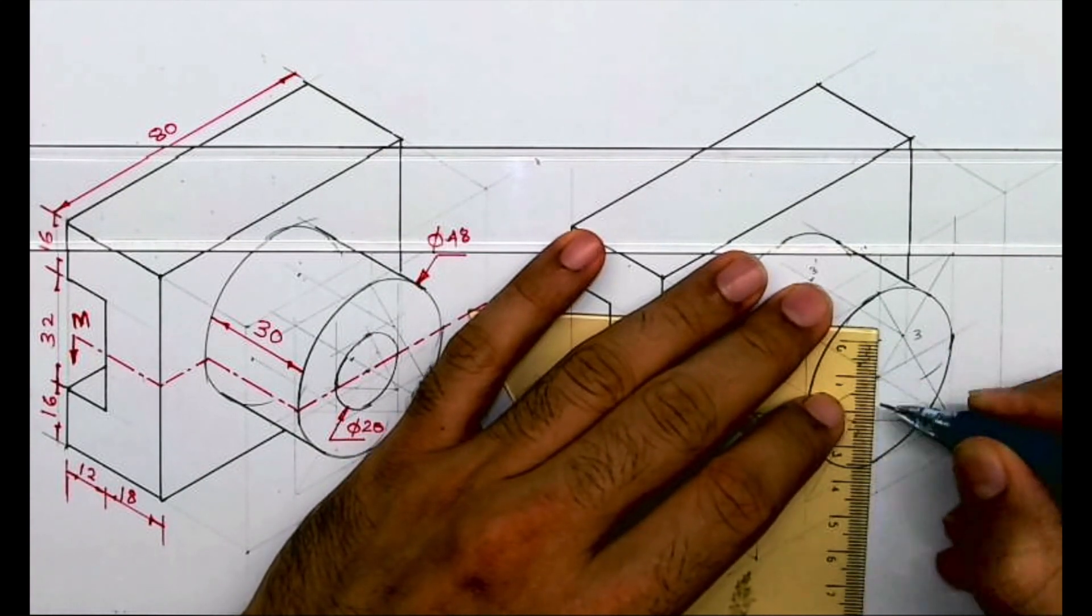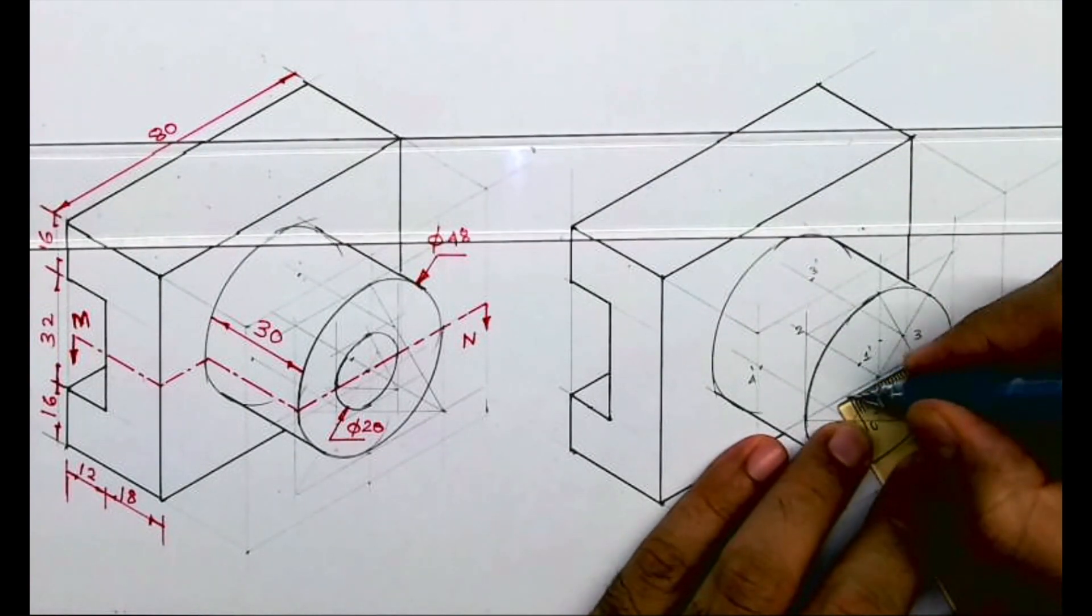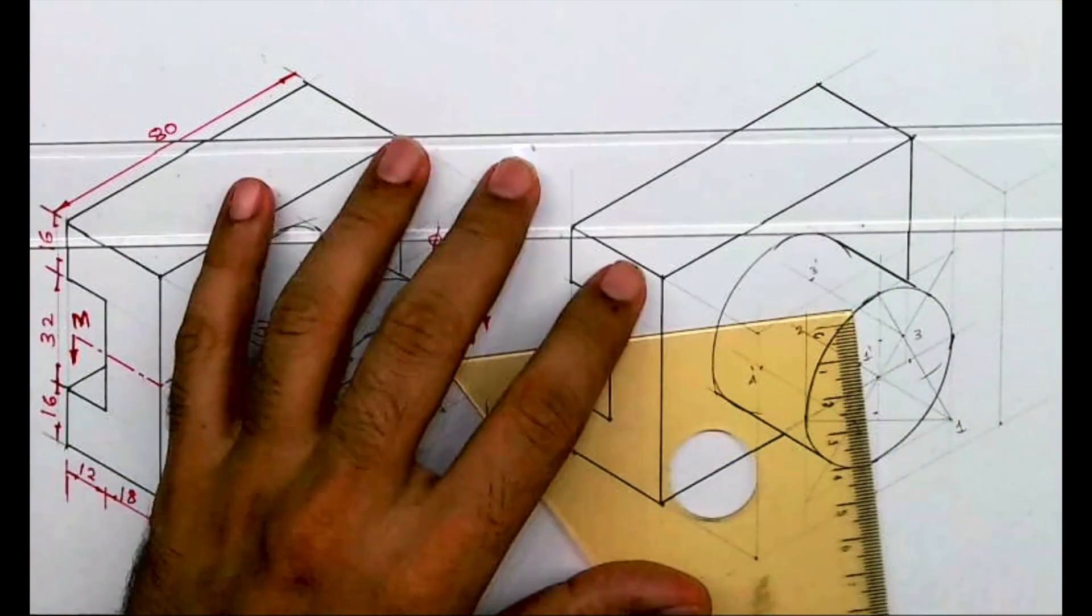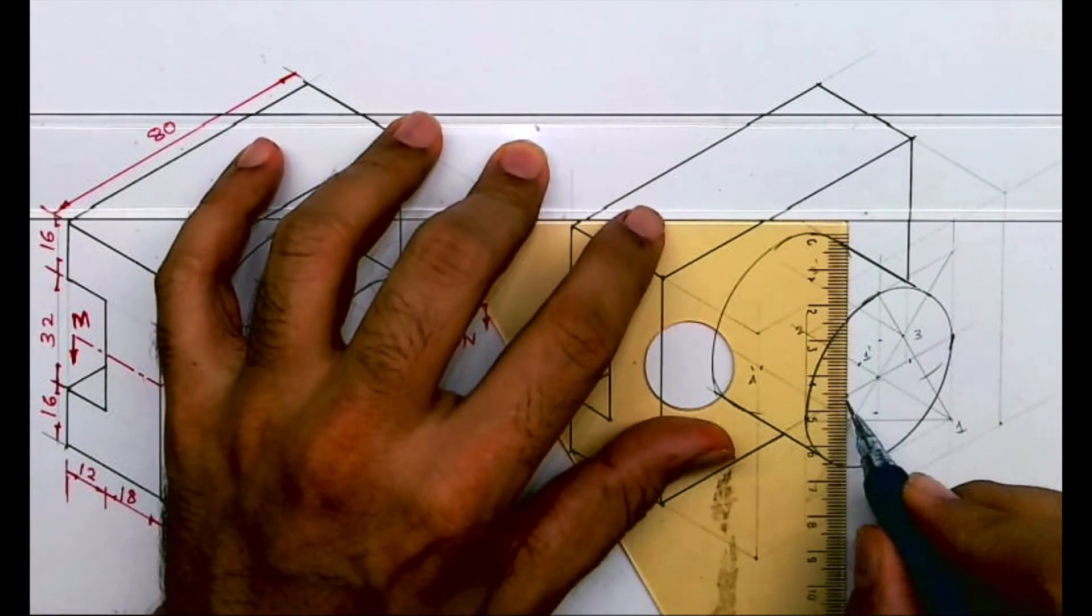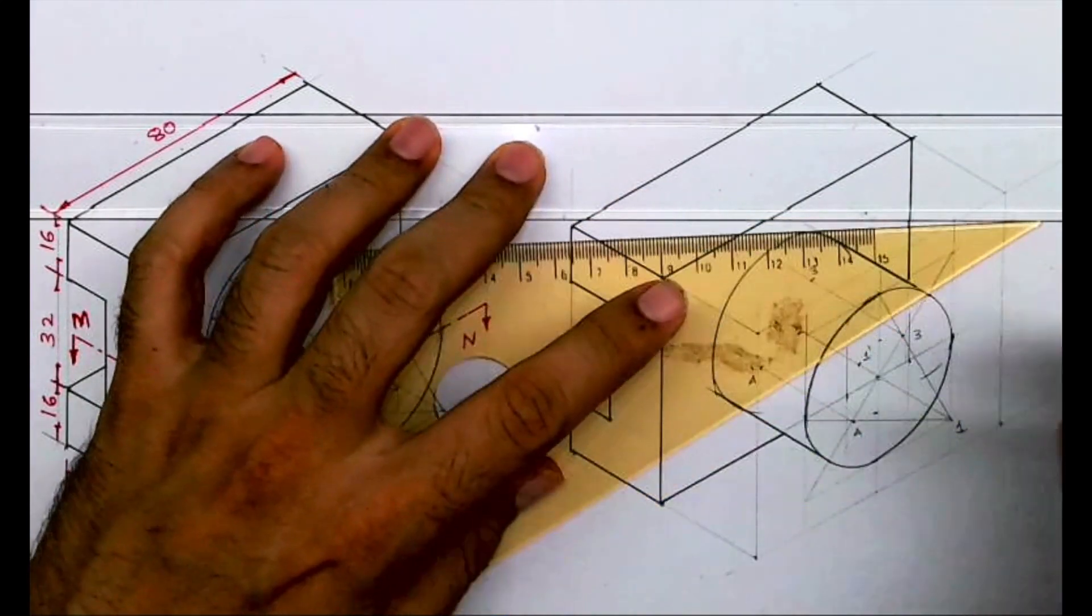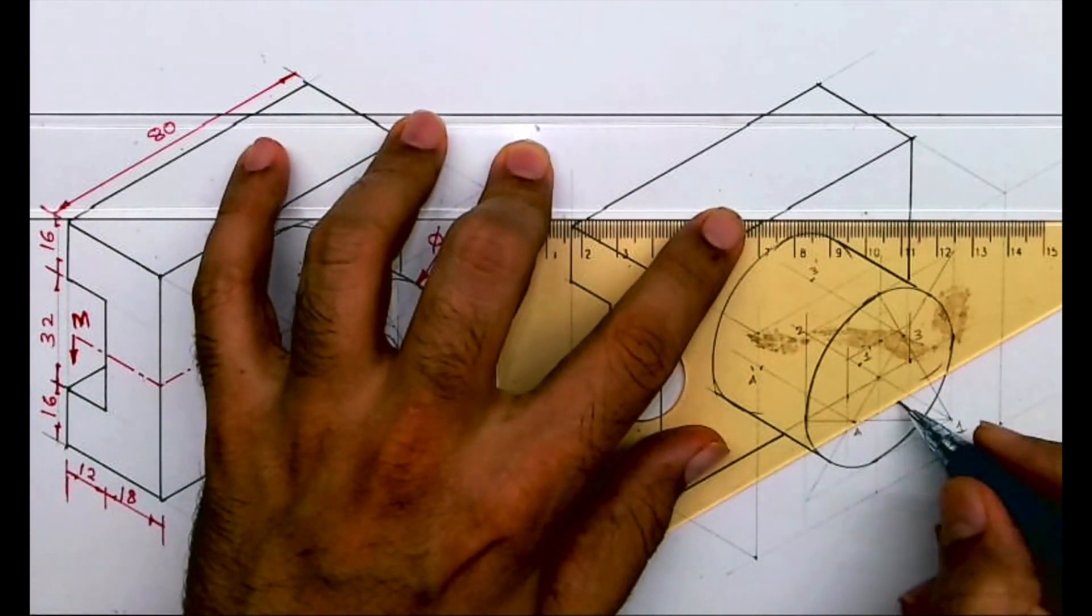From point 1 you go up by 10, down by 10, left and right 10, 10. Then you draw a vertical line. So this is how you will get the rhombus.